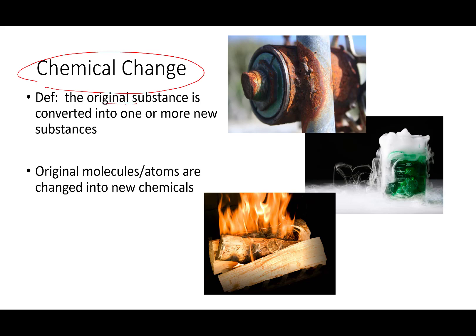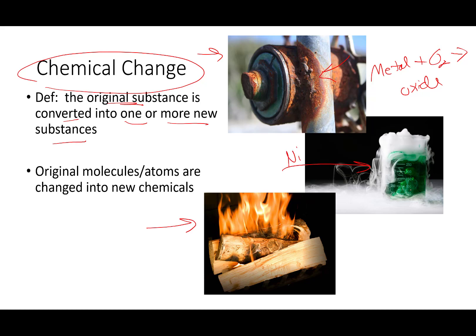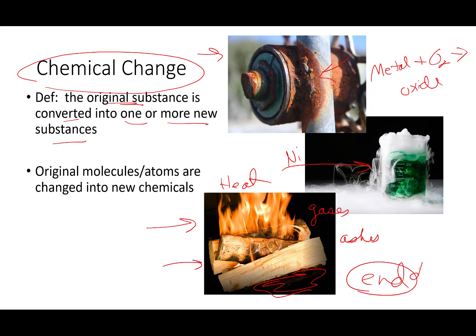A chemical change means the original substance has been converted into one or more new substances. Two you see constantly are rusting and burning. Rusting — a piece of metal reacts with oxygen and you get an oxide; iron oxide is common for rust. Burning — you burn a log and you get heat released, gases, and ash. When you're all done, the molecules at the end are going to be a whole lot different than the molecules you started with. That means a chemical change has occurred.